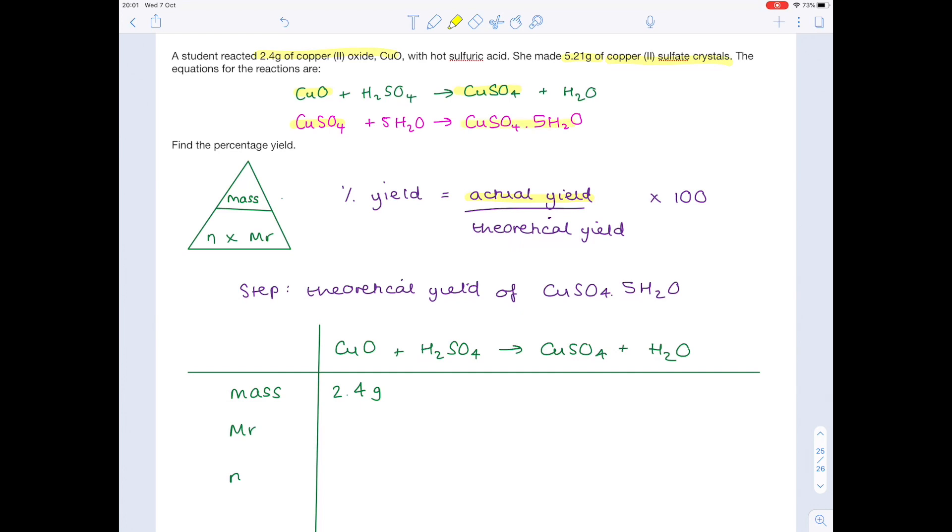Why do I know that I'm after the mass of copper sulfate? Because if you look at the second equation, that is going to feed into the crystals, which is actually what we're after. So really, our first step is to find out the mass of copper sulfate produced from 2.4 grams of copper oxide.